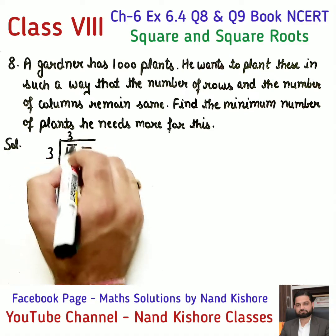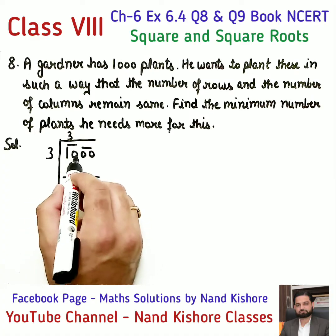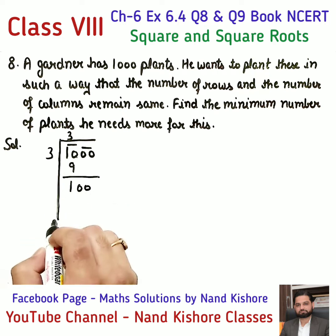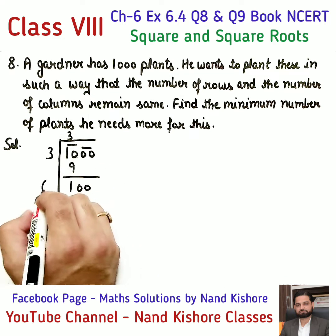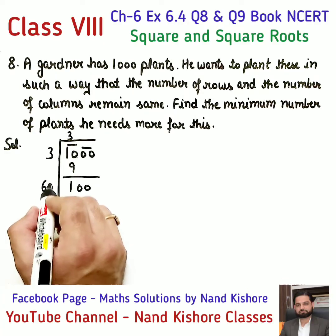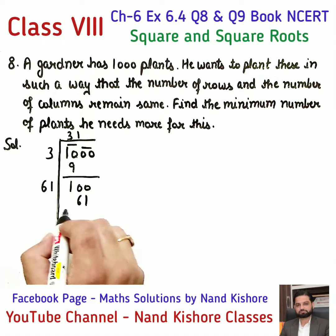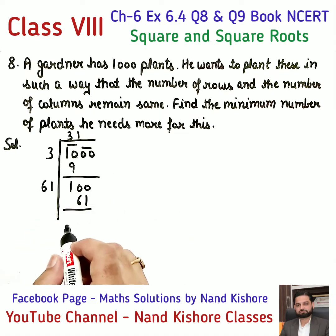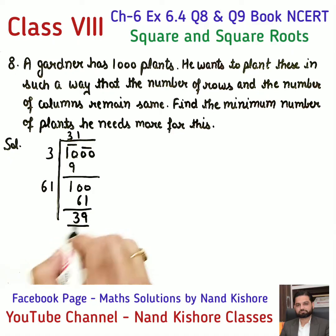3 threes are 9. 10 minus 9 gives 1. Then we bring down to get 100. Double of 3 is 6. Now we try 61 times 1 equals 61. Subtract: 100 minus 61 gives 39.